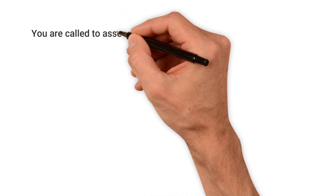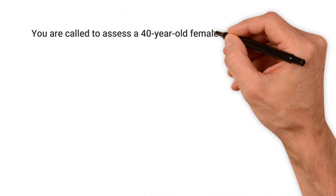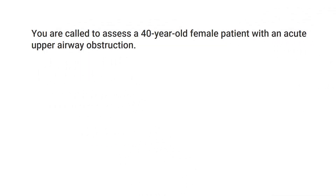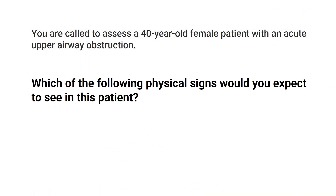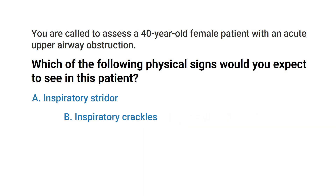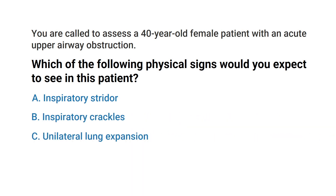You are called to assess a 40-year-old female patient with an acute upper airway obstruction. Which of the following physical signs would you expect to see in this patient? A) inspiratory stridor, B) inspiratory crackles, C) unilateral lung expansion, or D) dullness to percussion.